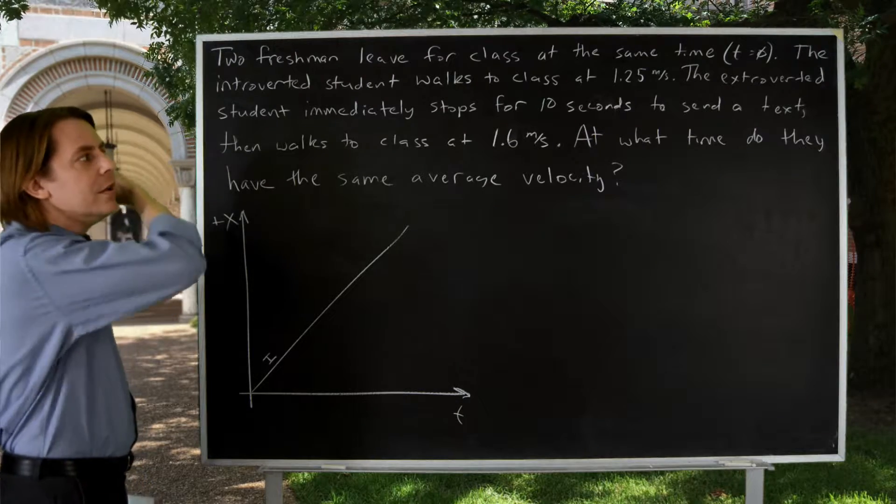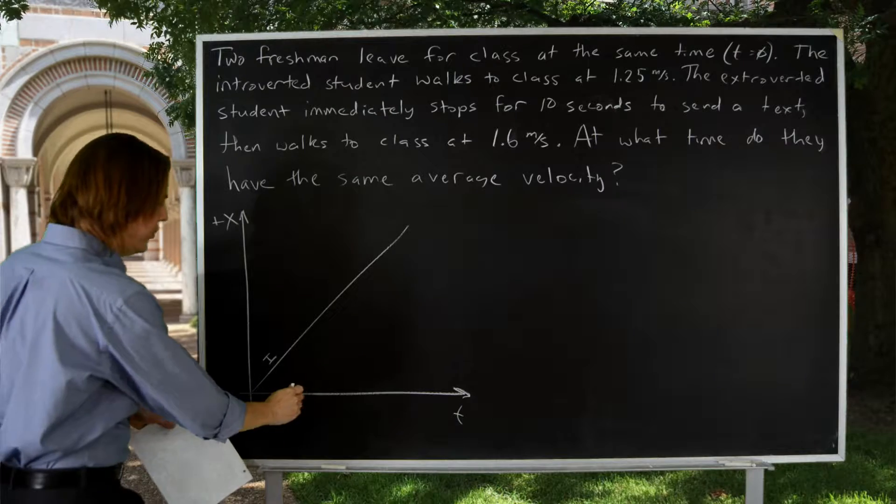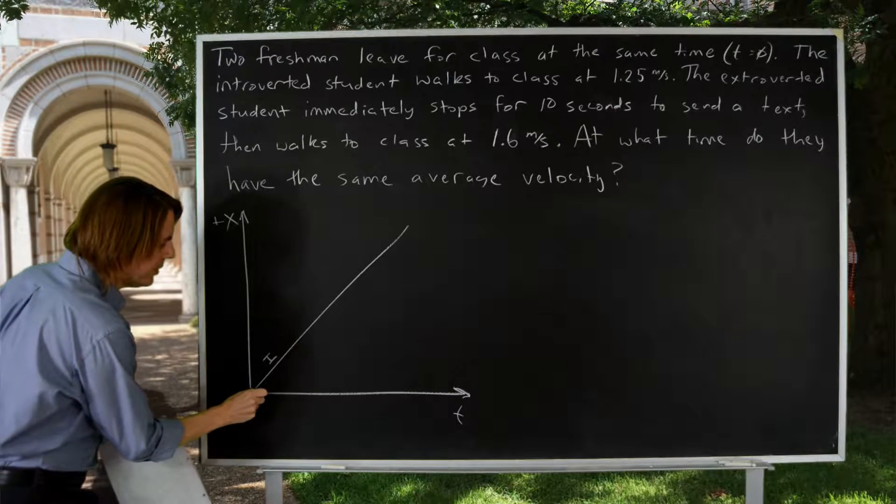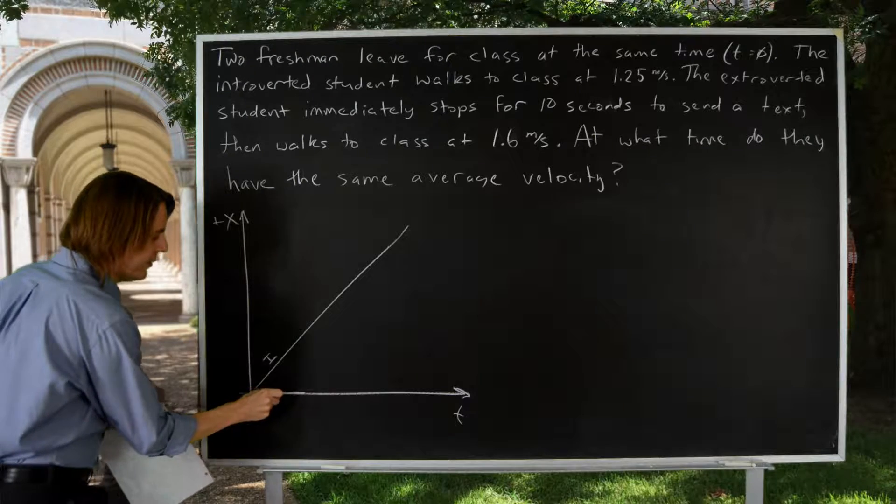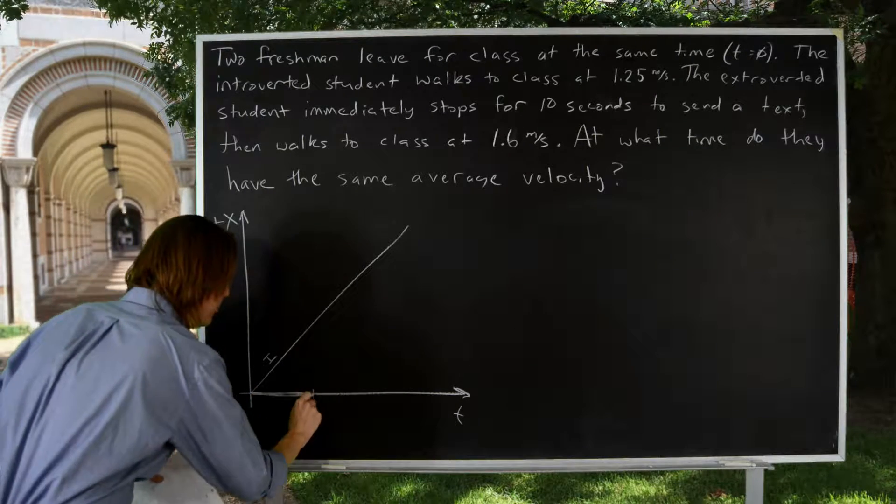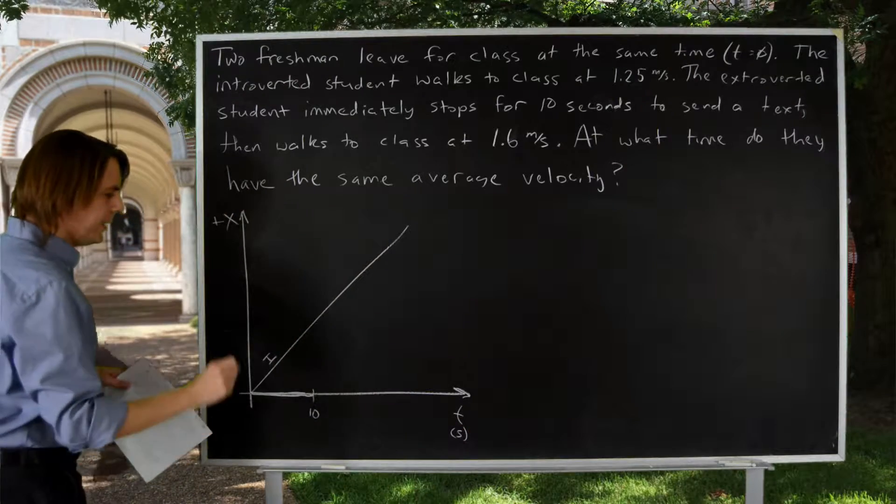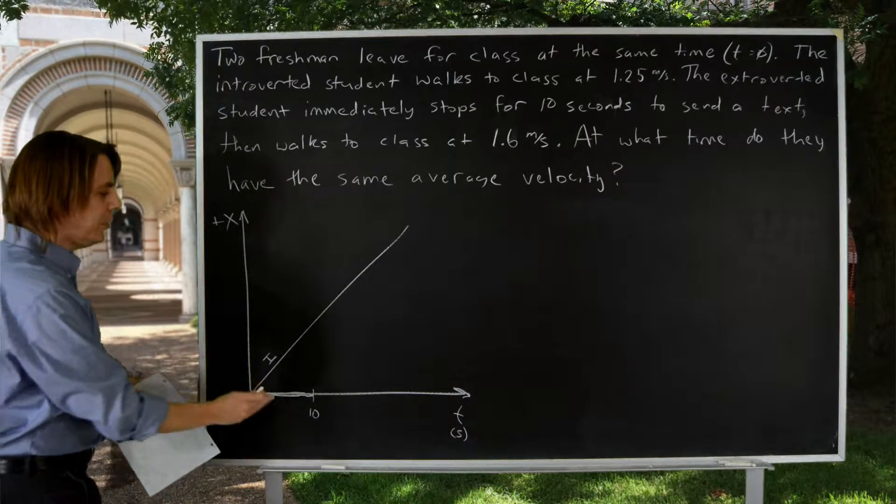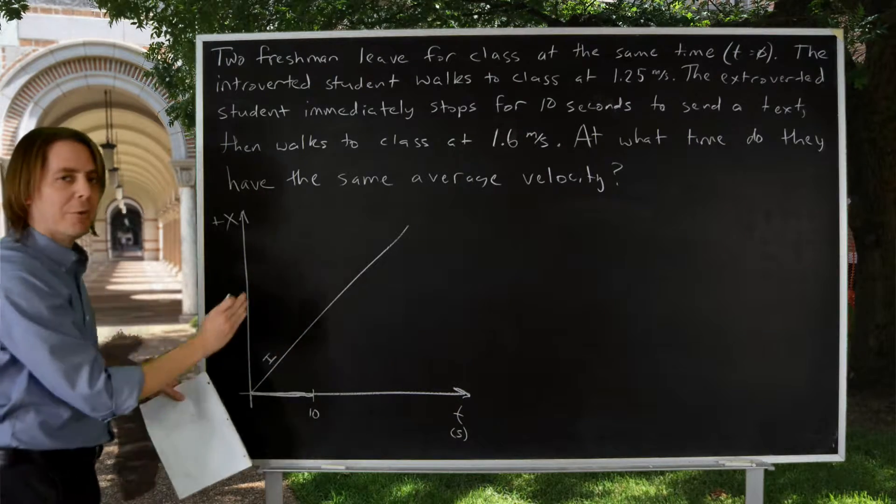The extroverted student did not move for 10 seconds, so as time marched forward, no displacement. So their plot would go kind of like this for a while, for 10 seconds, put a 10 there if this is in seconds, and then they took off, and they went a little bit faster. So when you make these plots, it doesn't have to be exactly perfect, numerically perfect, you just got to capture the main features.